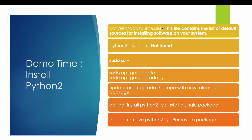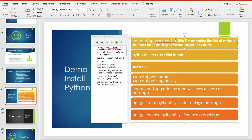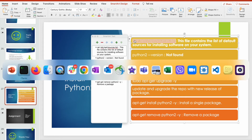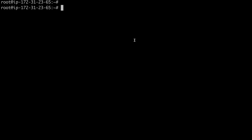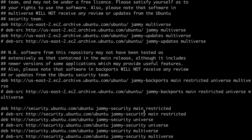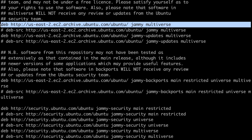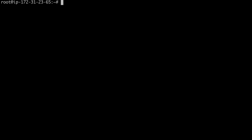Now let's get back to the PPT. The first important configuration file contains the list of default sources for installing software on your system. On an Ubuntu machine this file holds all the default repositories where packages are configured. To view the content of this file use the cat command — cat is used to display information in a file. These are the default repositories that come pre-configured with the Ubuntu machine when it is first installed.